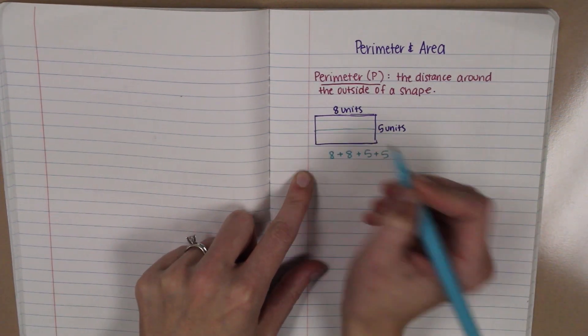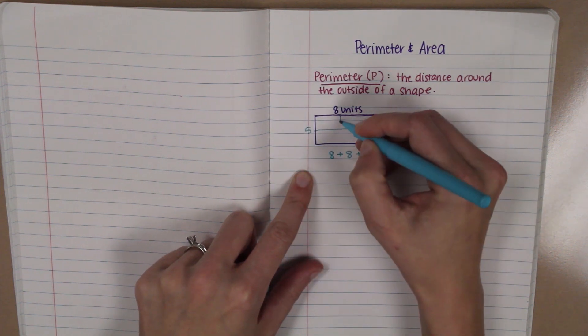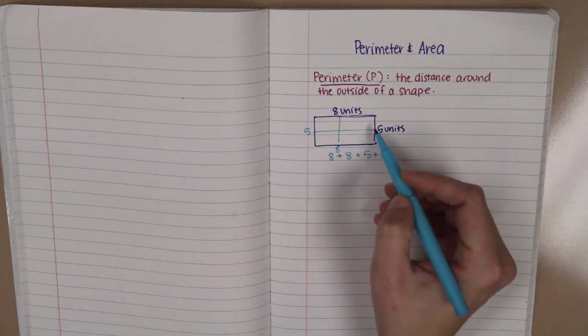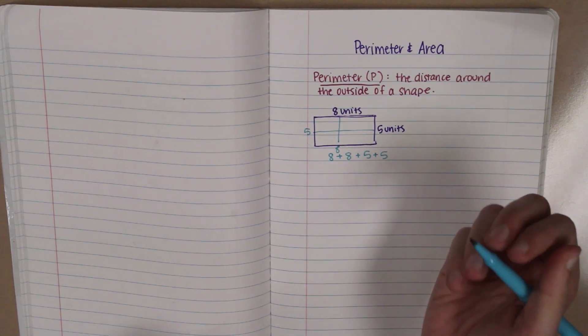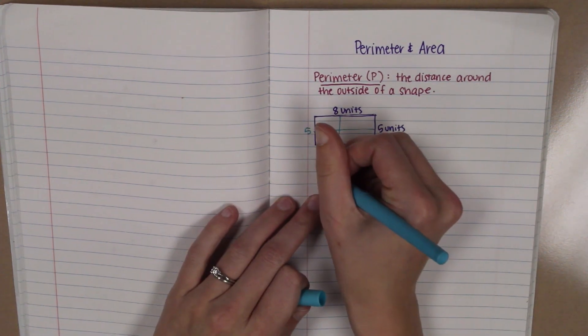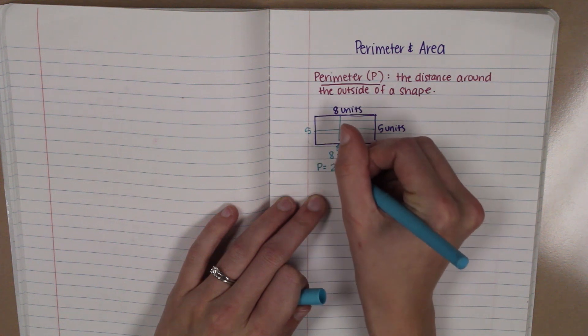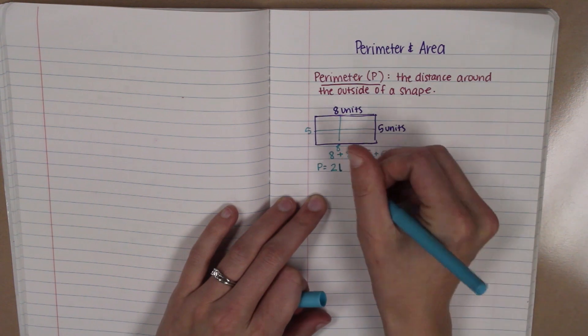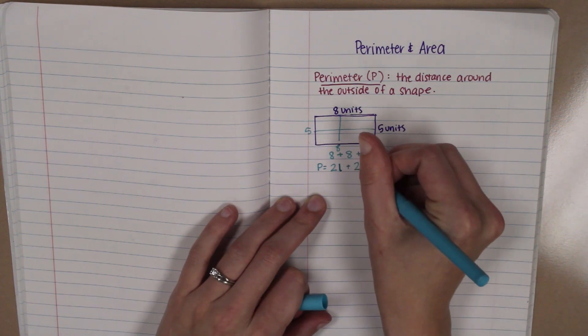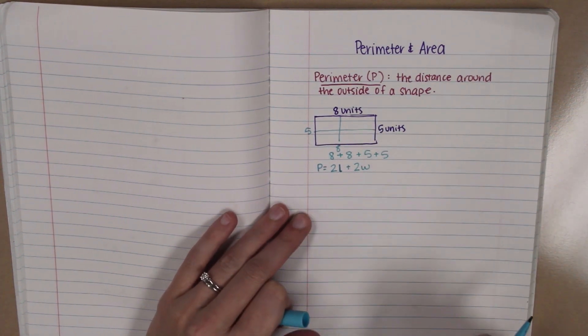It might even help you to kind of do this business where you label the other sides like you did in elementary school. All we want to know is the distance around. We add all of those up and get our perimeter. We're also going to put down your formula here is to take two lengths. That's an L, not a one. And two widths. Add them together and that gets you your perimeter.